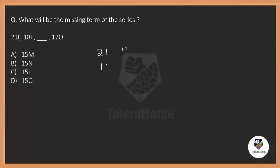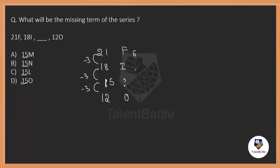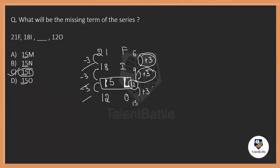Next question: given 21, F; 18, I; question mark; 12, O. For the numbers: 21 minus 3 is 18, 18 minus 3 is 15, 15 minus 3 is 12 — so the missing number is 15. For the alphabets: F is 6, I is 9, O is 15. 6 plus 3 is 9, 9 plus 3 is 12, 12 plus 3 is 15. Which alphabet stands for 12? It is L. So the answer is 15 L — option C. The number follows minus 3 and the alphabet follows plus 3 each time.